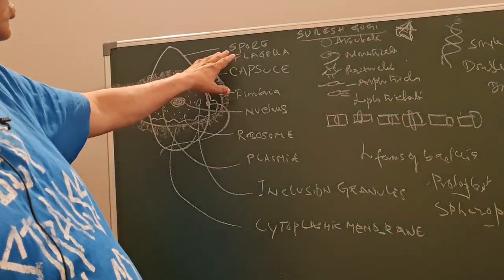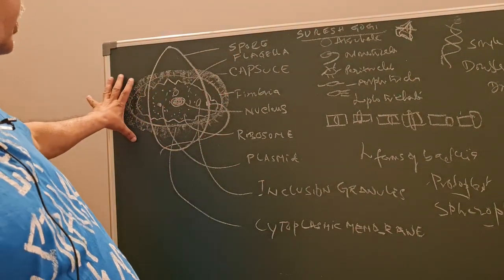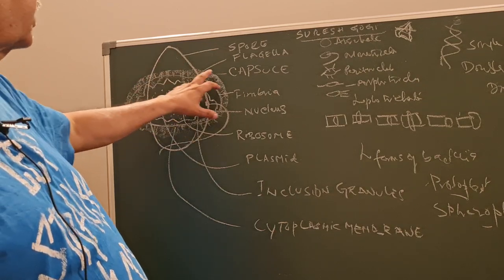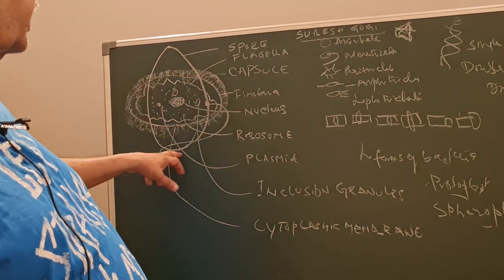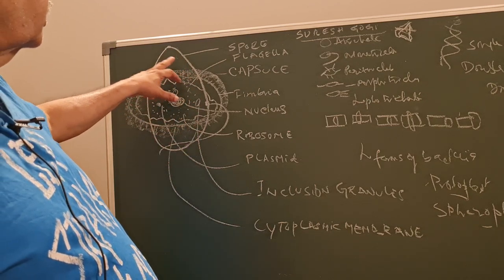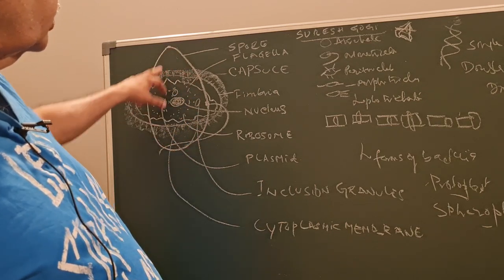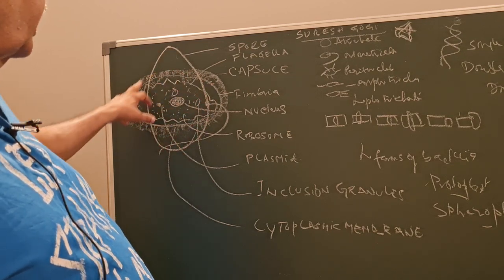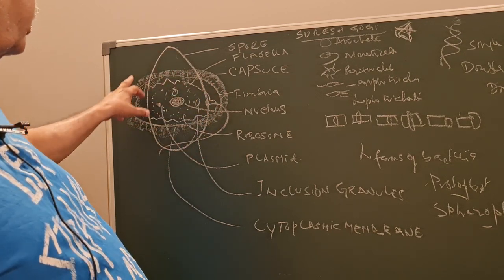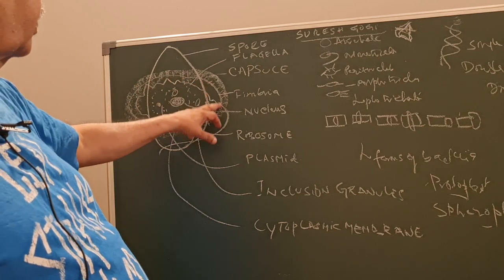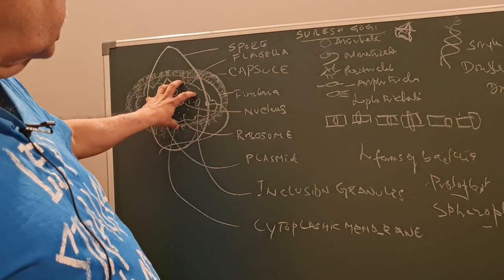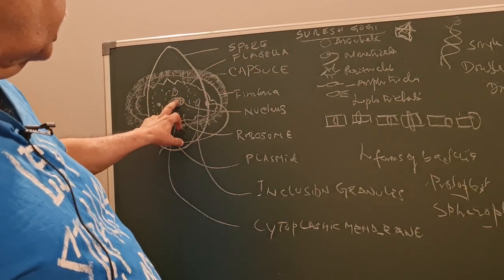This is the morphology of a bacterial cell. When bacteria undergo a hostile condition, they go for sporulation. Some bacteria have an outer covering called a capsule. Bacteria is made up of a cell wall and cytoplasmic membrane, with ribosomes and cytoplasm inside.